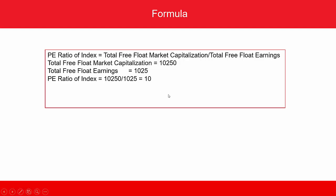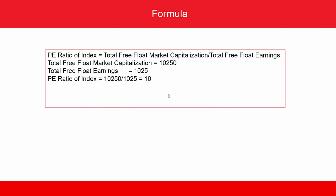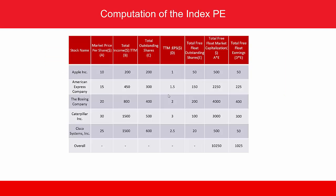The PE ratio of the index is 10,250 by 1,025, which is 10. In this way, the PE ratio for any given index can be computed. The PE ratio is dynamic — it changes every day, for every point in time, because for every change in the price of the components of the index, the PE ratio will change. Since stocks are traded daily, prices change and the PE ratio changes accordingly.